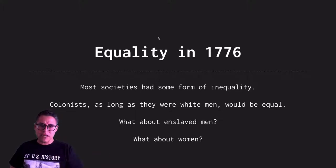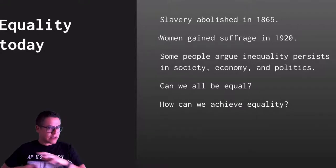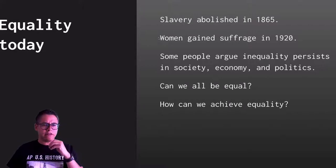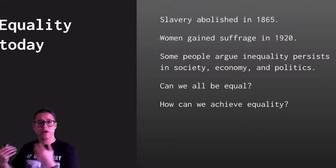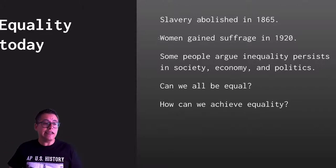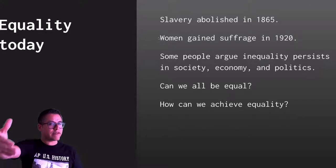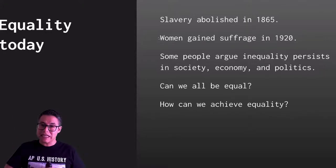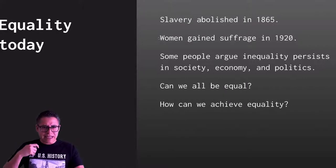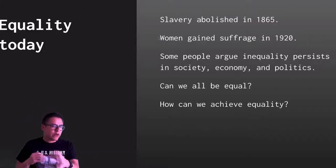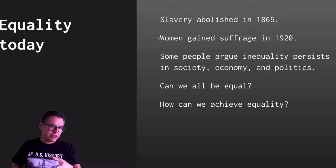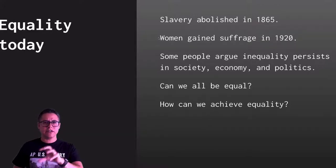Today, even though slavery has been abolished since 1865 and women have had the right to vote since 1920, some people still argue that things are not as equal as they should be — whether in the economy, in politics, or in society. A lot of people still believe equality is a goal that keeps moving away from us. The questions to ask are: can we really be equal as a nation, and is it up to us or up to the government to ensure equality? Those are debates Americans still have today.